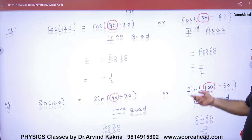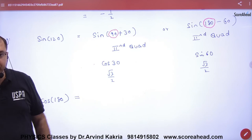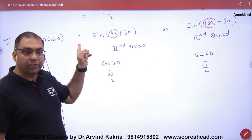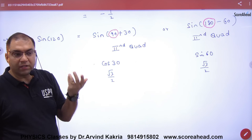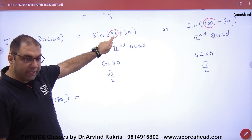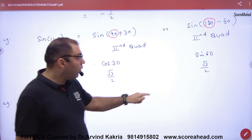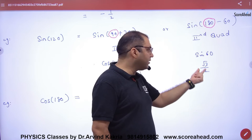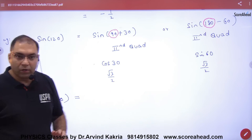Now let's find sin 120. Break it as either 90 plus 30 or 180 minus 60. Which quadrant is 120 in? The second. What is sine in the second quadrant? Positive. The first standard angle is 90, so sin converts to cos — giving cos 30, which is root 3 by 2. Using 180 minus 60: sin remains sin, giving sin 60, also root 3 by 2.